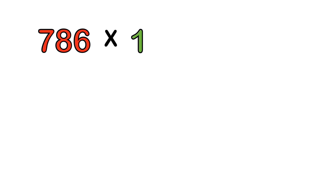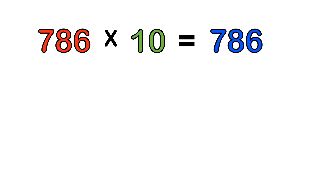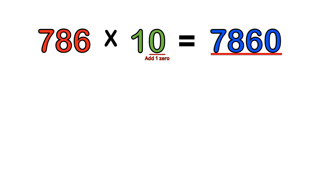Let's take a look at another example: 786 times 10. How quickly can you do that? Remember the steps: take the whole number, copy it into the answer, count the number of zeros and add that to the end of the answer. So 786 times 10 equals 7,860.